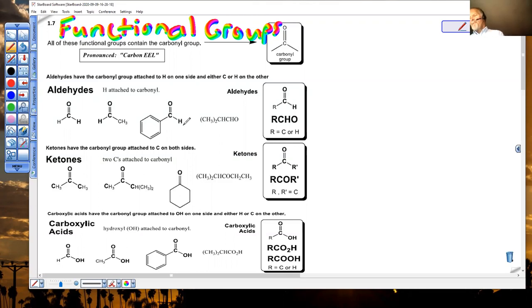Aldehyde has a carbonyl with a hydrogen on one side and either a hydrogen or a carbon on the other side. Once again, carbonyl, hydrogen on one side, carbon on the other. And when it's drawn like this, we have to learn, as we indicated in our preview of functional groups, this short form, CHO.